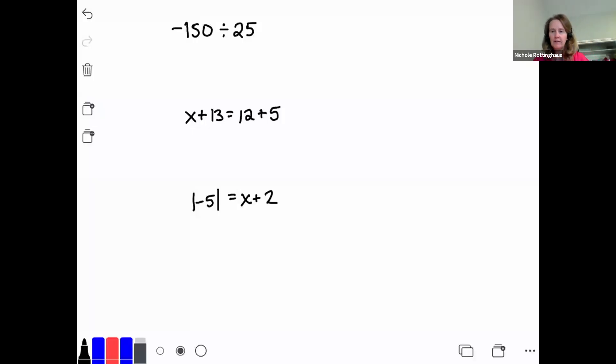Okay, so let's go ahead and solve the warm-up problems. The first problem is integer division, dividing a negative by a positive, which means my answer is going to be negative. And 150 divided by 25 is 6.